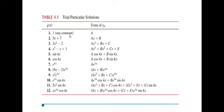Now let's look at what to assume for YP based on the form of g(x). If g(x) is a constant, assume YP = A. If g(x) is linear, assume YP = Ax + B. If g(x) is quadratic, assume YP = Ax² + Bx + C. If g(x) is cubic, assume YP = Ax³ + Bx² + Cx + E. If g(x) = sin(4x), assume YP = A·cos(4x) + B·sin(4x). If g(x) = cos(4x), assume YP = A·cos(4x) + B·sin(4x).